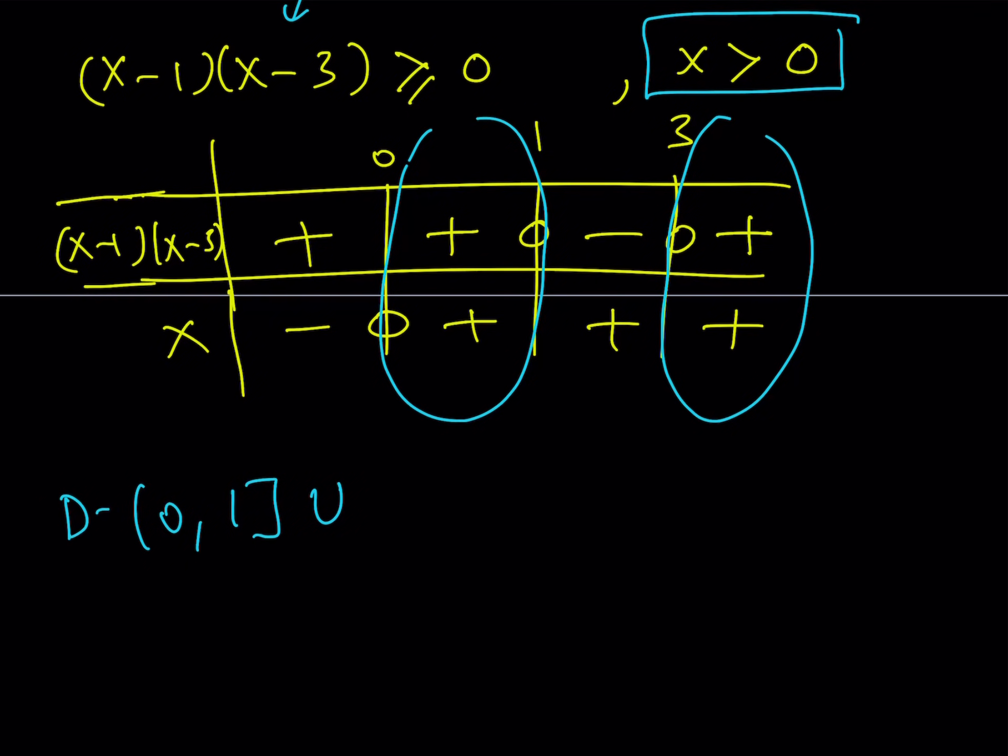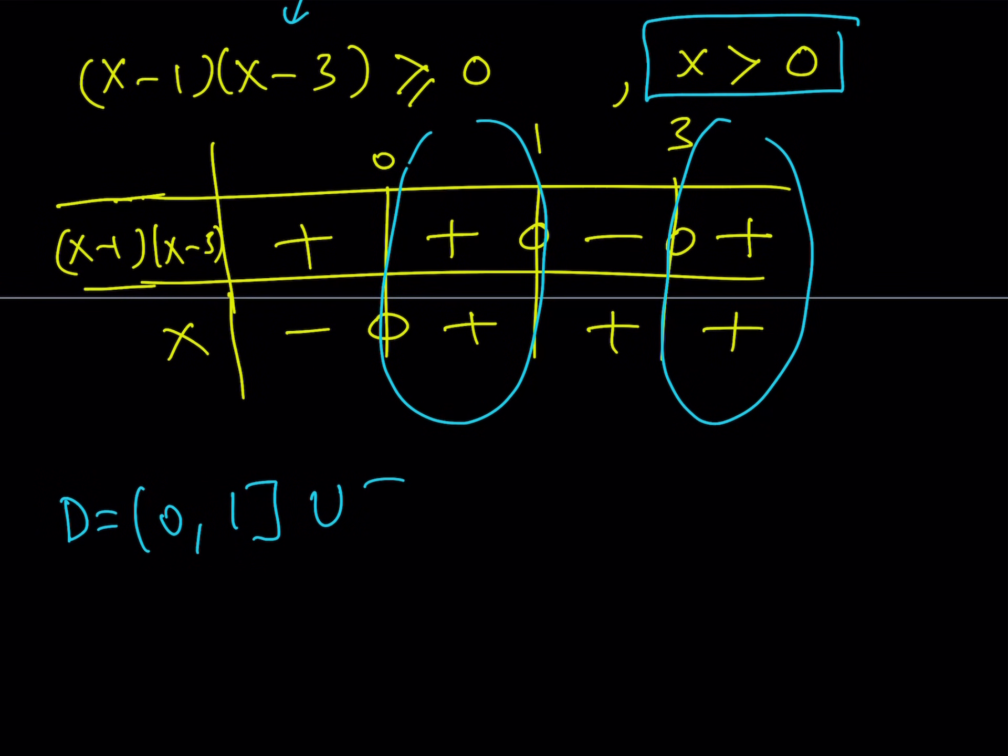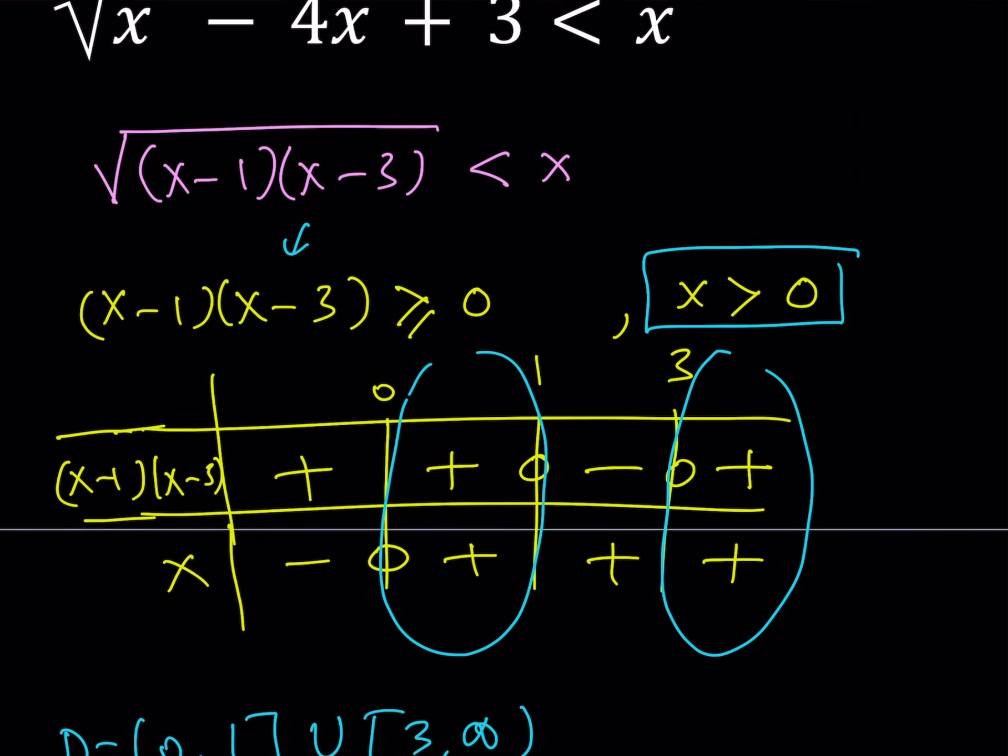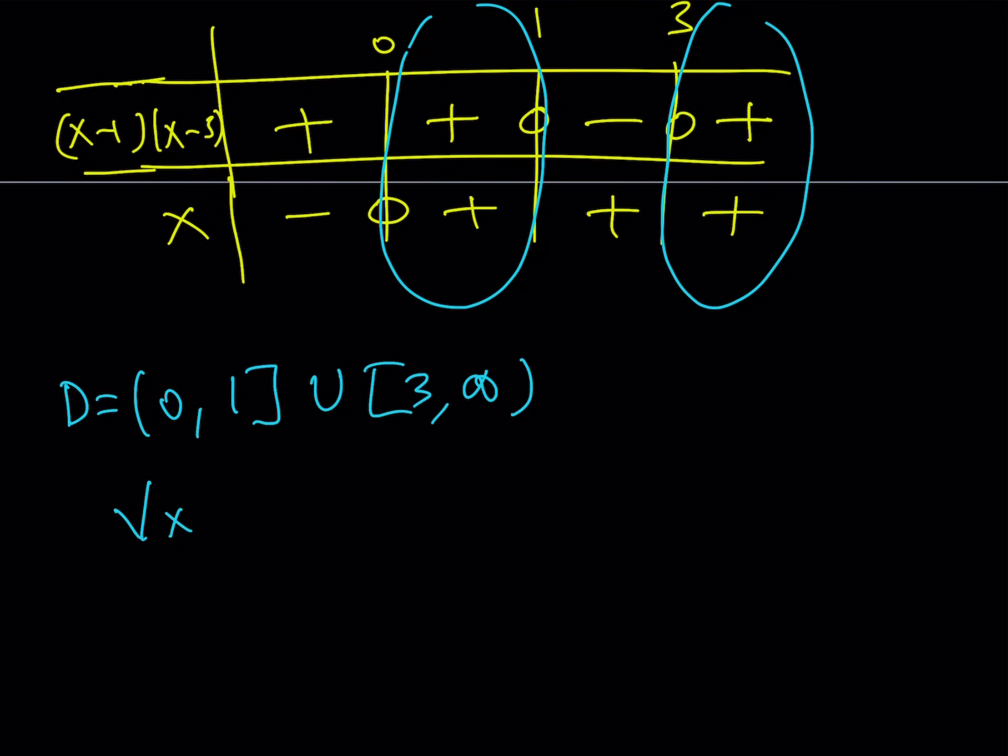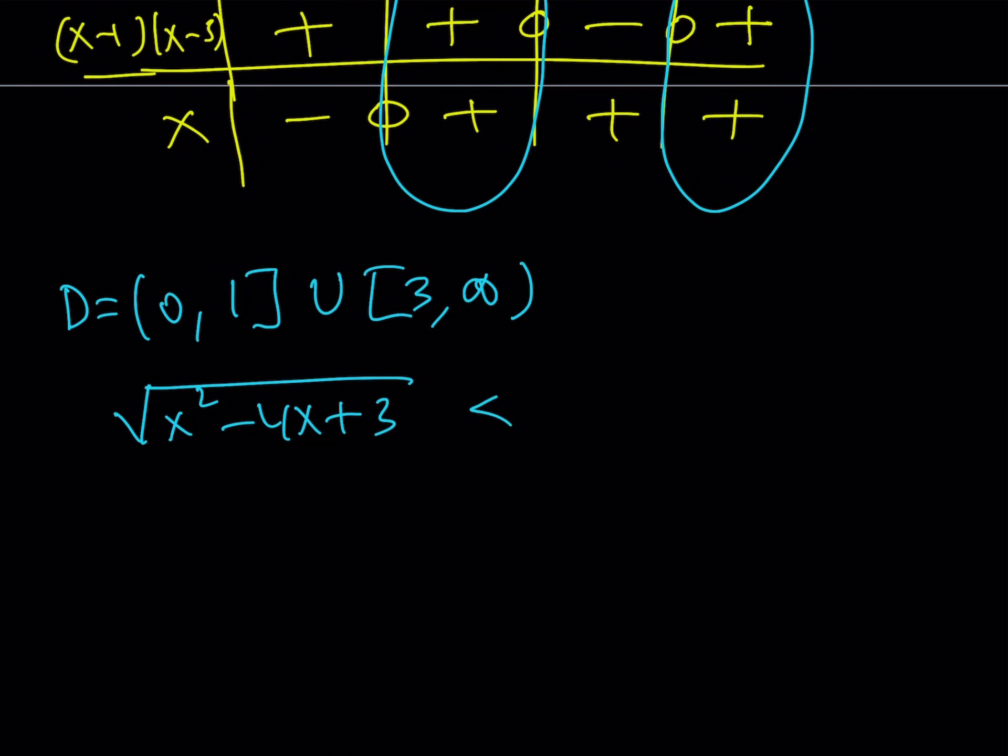And then union, this is my domain, by the way, union 3 to infinity. But 3 is included, so I can include it, but infinity is never included. Great. So that's my domain. When I solve inequality, I have to pay attention to the domain. Now let's go ahead and talk about solving this inequality.